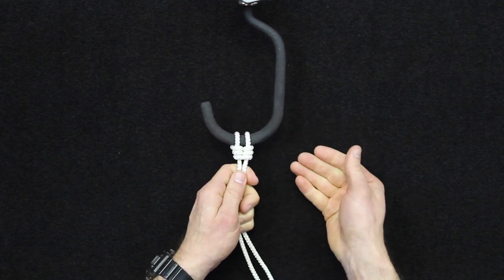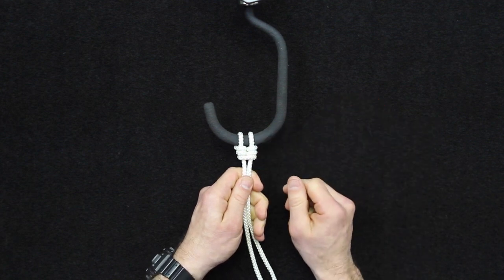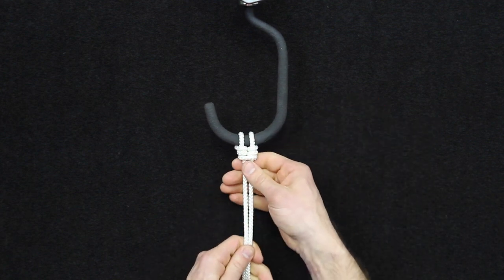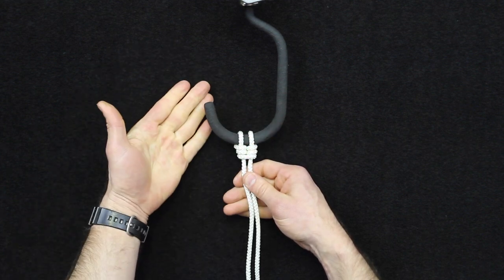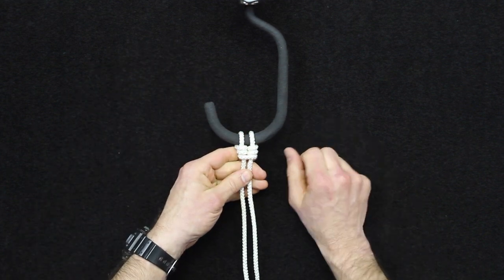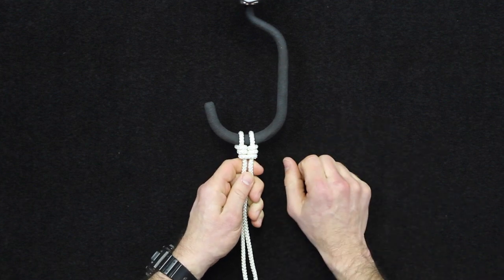So the real difference between a girth hitch and a Cat's Paw is the multiple wraps, but also this is for putting it onto a hook rather than a fixed loop, which you'd use a girth hitch for.